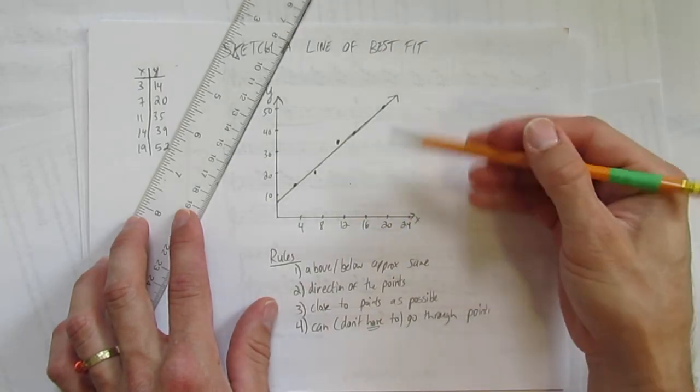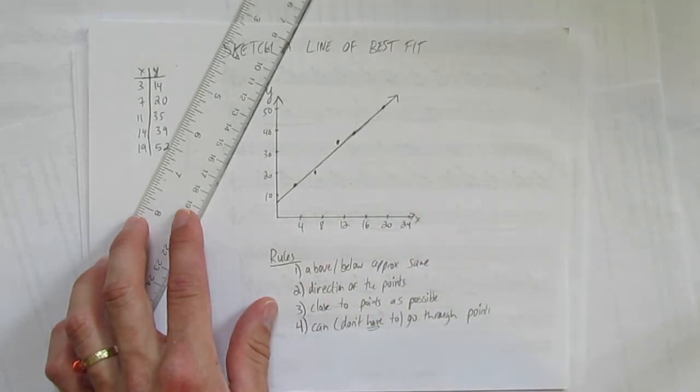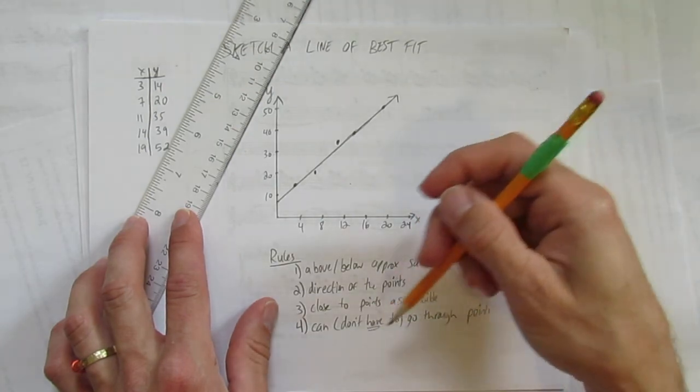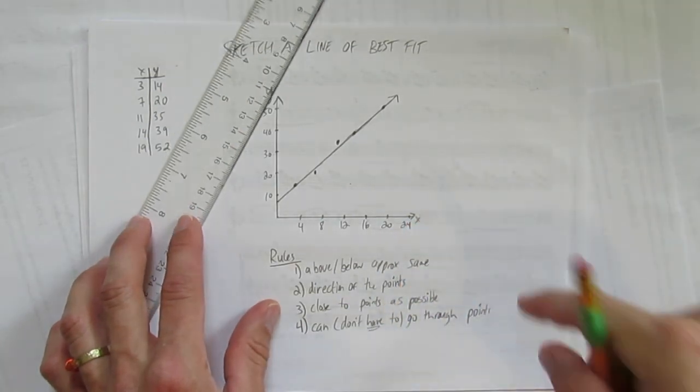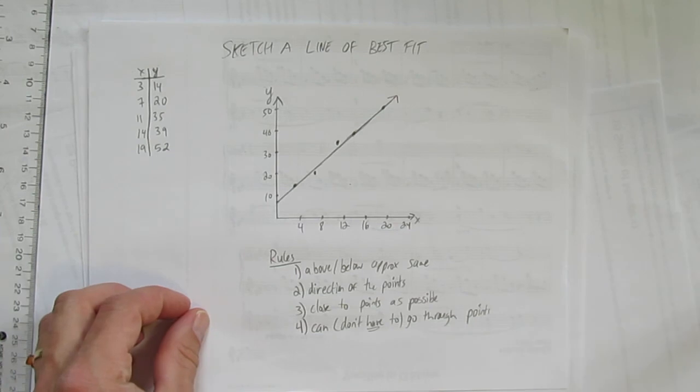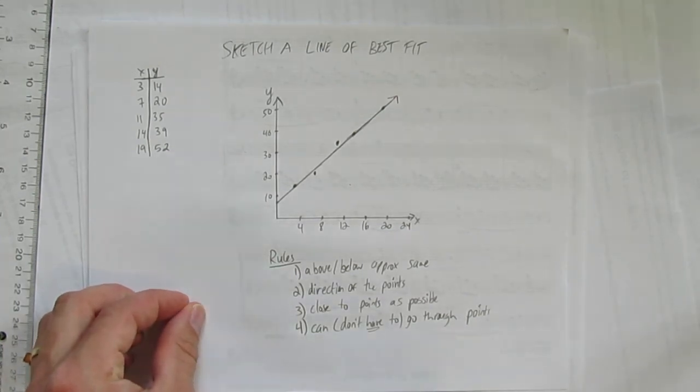I'm going in the direction of the points clearly. I'm as close to the points as possible. And I managed to, though I didn't have to, go through points. So that's it. I've sketched a line of best fit.